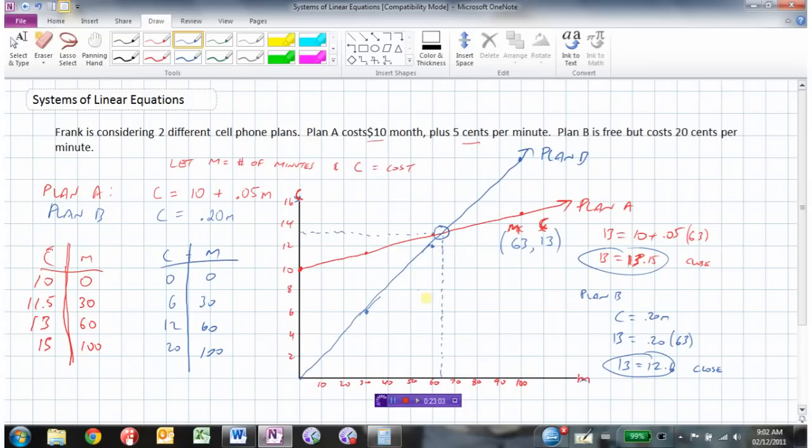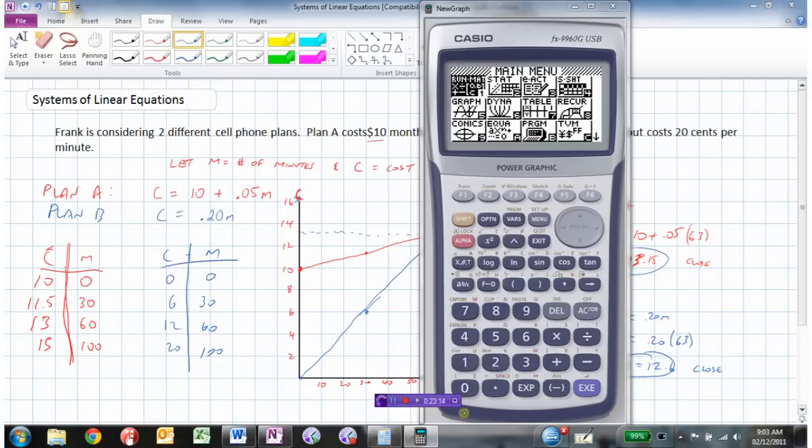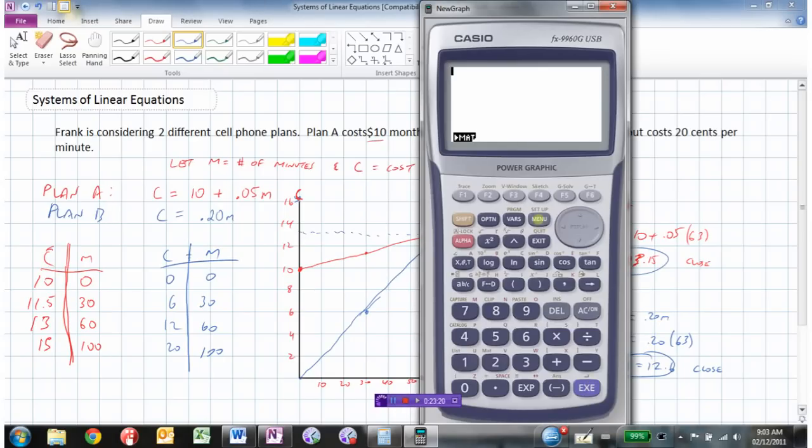So we will learn a better way, an algebraic way a little bit later to find those points exactly. If we wanted to do it graphically, the way that we would do it is with our graphing calculator. So let's figure out exactly what the answer is.